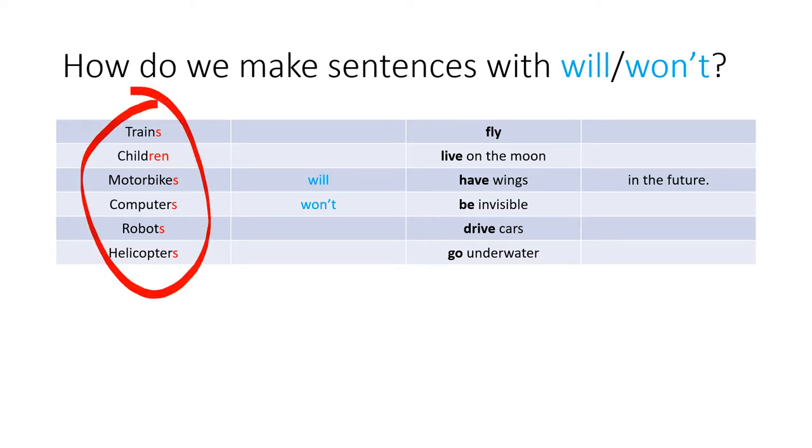It can be anything you want, but it should be in plural, it should have the s. For example, trains or children or motorbikes. These things are plural. We're talking about motorbikes in general or computers in general.